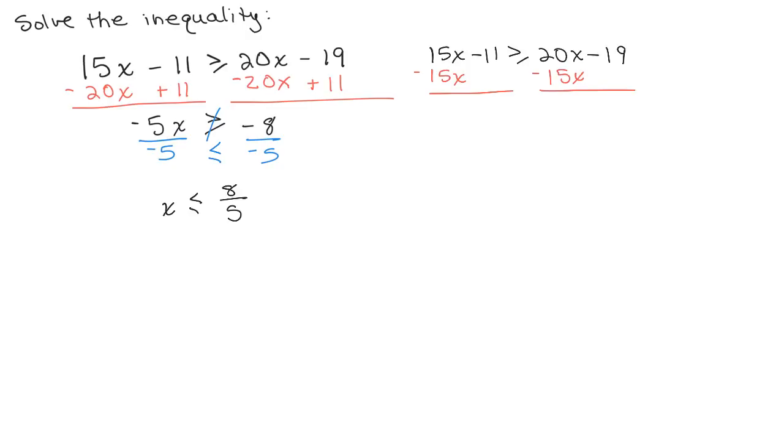So the variable is on the right side. I don't want to have this minus 19. I'll add 19 to both sides. And negative 11 plus 19, that's a positive 8. So I have 8 is greater than or equal to 5x.